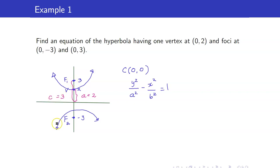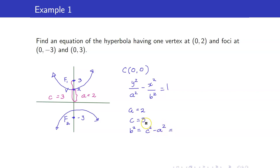So therefore, our c is 3. We have a equal to 2 and c equal to 3. How do we get b? Recall that b squared is equal to c squared minus a squared. So therefore, that's 9 minus 4, which is equal to 5. So therefore, the equation of our hyperbola is y squared over a squared, which is 4, minus x squared over b squared, which is 5, equal to 1.